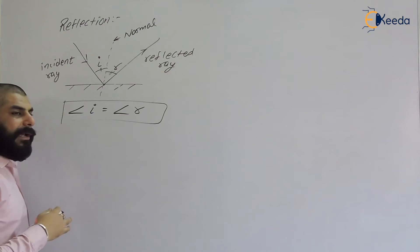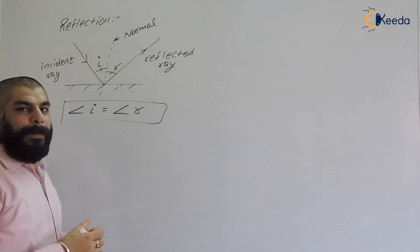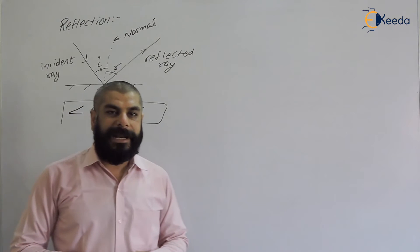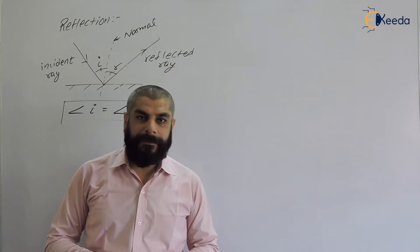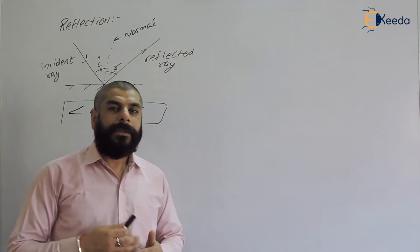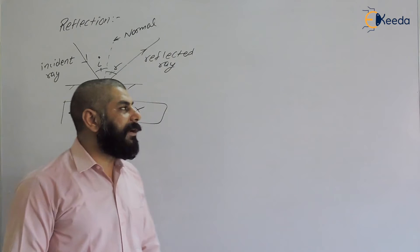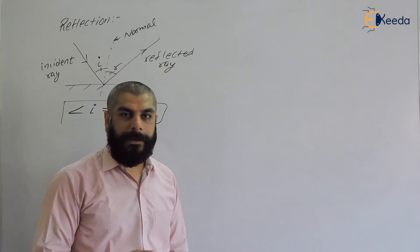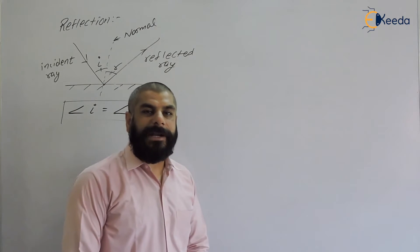Now we will discuss about refraction. When light passes from one medium to another medium, it deviates from its path — that is called refraction. To understand why light deviates from its path — whether it deviates towards the normal or away from the normal — a medium is characterized by a term called refractive index.